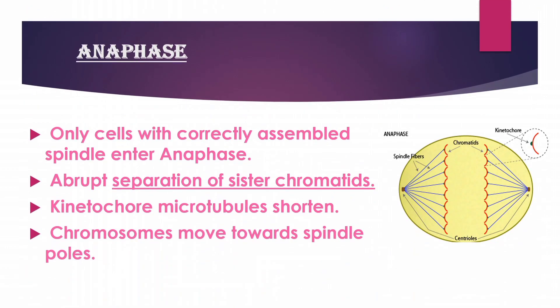Anaphase is the fourth phase. Only cells with a correctly assembled spindle enter anaphase. Microtubules attached to the kinetochore shorten, pulling chromosomes toward the spindle poles. The sister chromatids are separated and move to opposite poles.